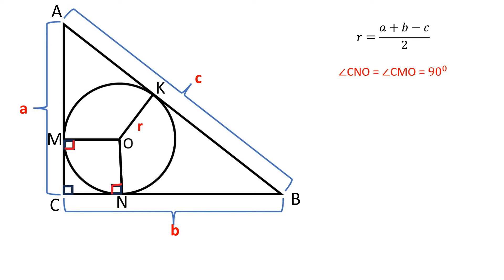Angles CNO and CMO are both equal to 90 degrees because the radius of a circle is perpendicular to the tangent line through its end point on the circle's circumference. And since OM is equal to ON, CMON is a square.